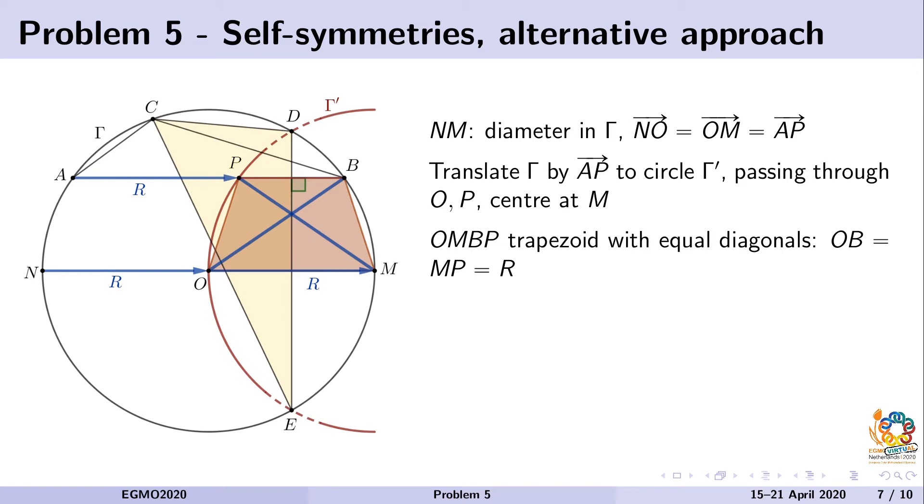So it's enough to prove that points D and E also belong to circle gamma prime. Moreover, this translation vividly shows us that OMBP will be an isosceles trapezoid. We knew that AMNB was an isosceles trapezoid.